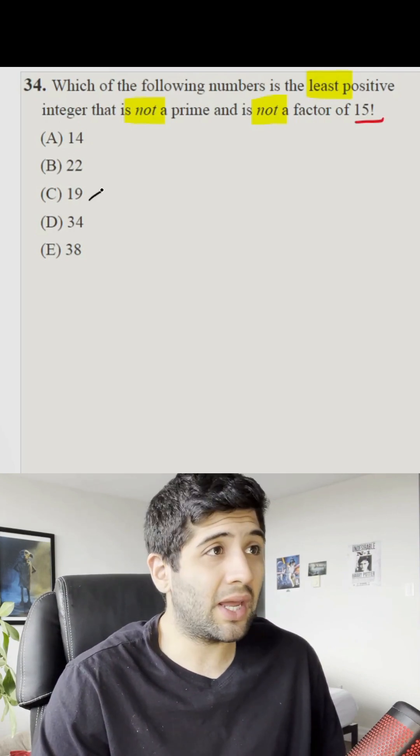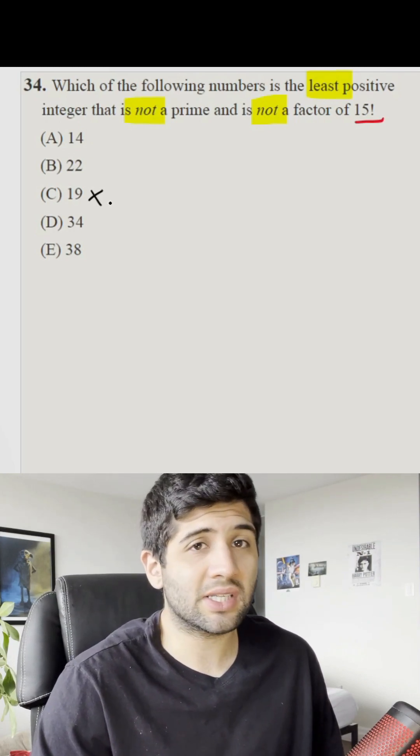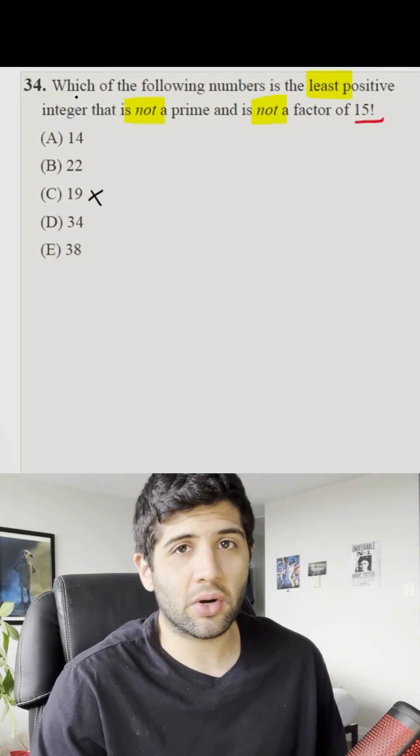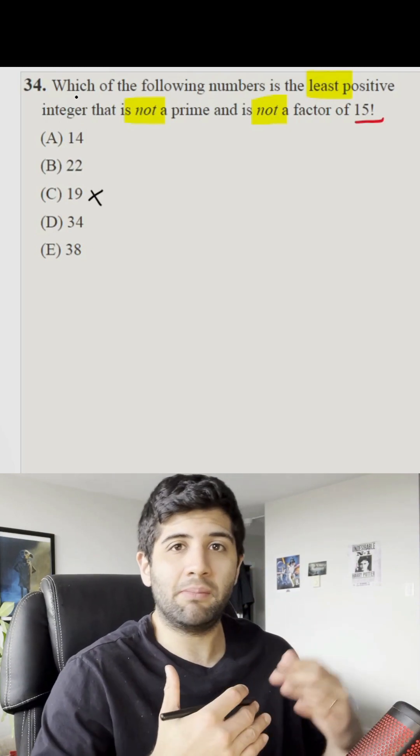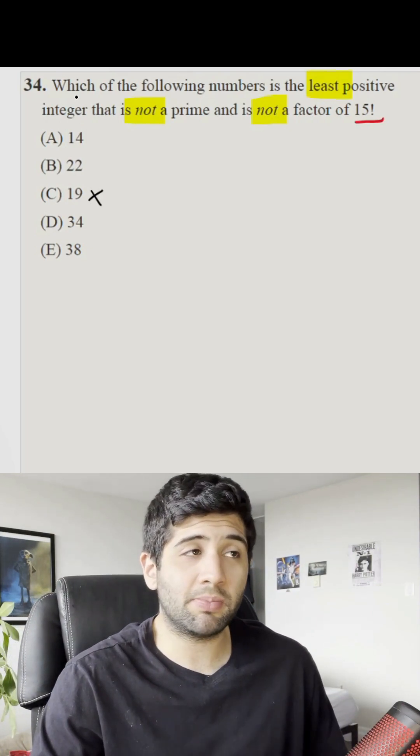In this case we can eliminate letter C right away because it's a prime number and it's not required for our answer. Another tip: you can take the number in the middle so you can test all the possibilities. In this case the middle number is letter B.